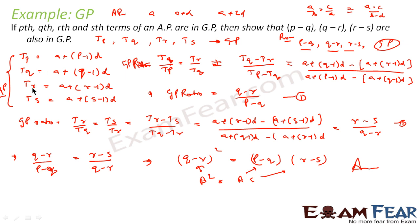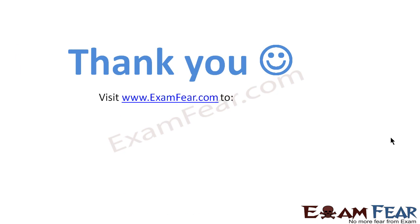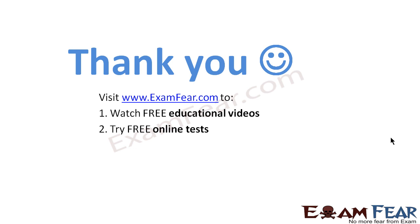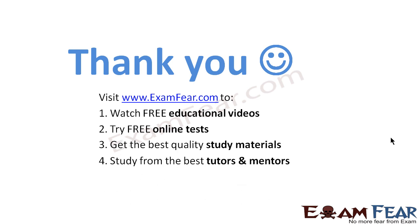We were told that tp, tq, tr, ts are in GP. Since they were in GP, we found the common ratio, equated the equations, and proved that (p−q), (q−r), (r−s) are in GP. Thank you. Visit examfear.com to watch free educational videos, try free online tests, get the best quality study materials, and study from the best tutors and mentors.